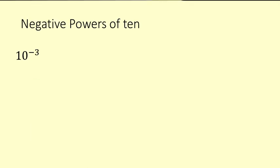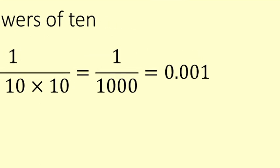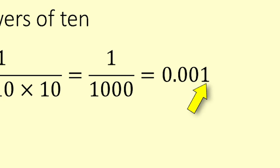There are also negative powers. With a negative power it means 1 over that, or 1 divided by that. So 10 to the power of negative 3 is 1 divided by 10 times 10 times 10, or 1,000. In decimal form you've got 1 tenth, 1 hundredth, 1 thousandth — so it's 0.001.